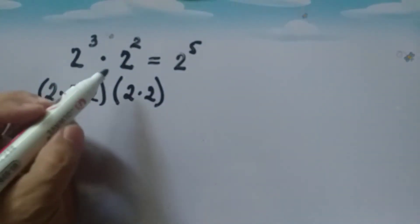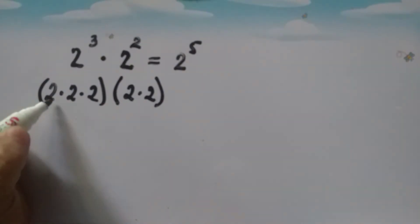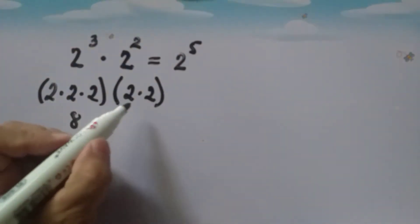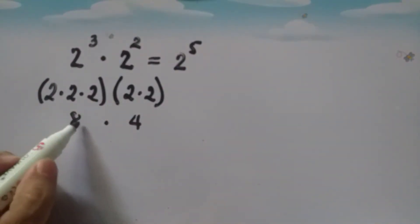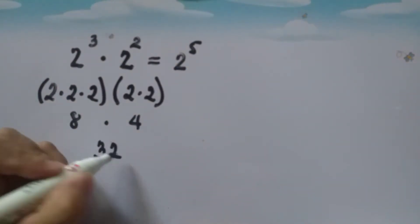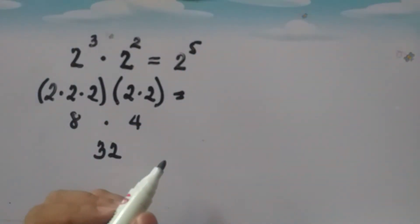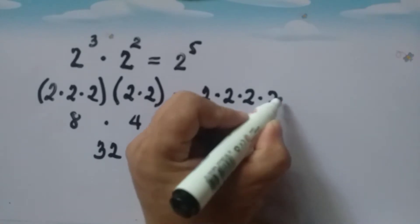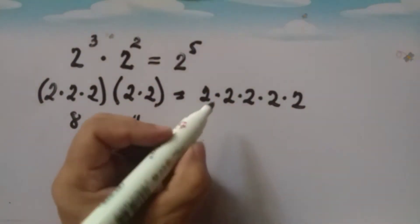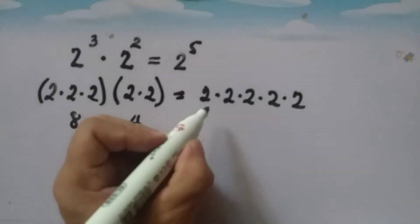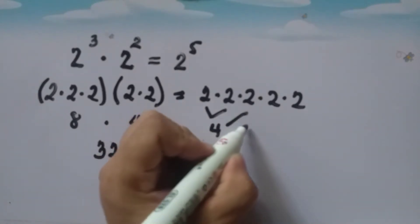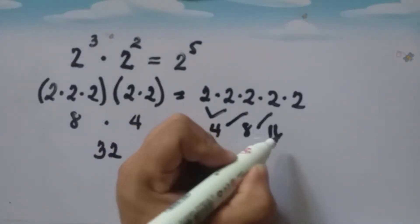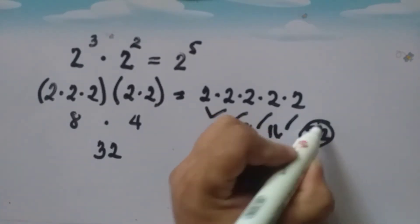2 squared is 2 times 2. So 2 times 2 times 2 is 8, and 2 times 2 is 4, then 8 times 4 is 32. And 2 to the fifth simply means 2 times 2 times 2 times 2 times 2, and the product is also 32.